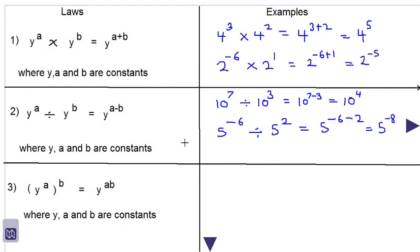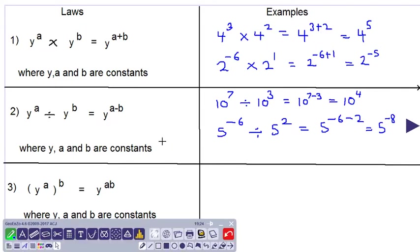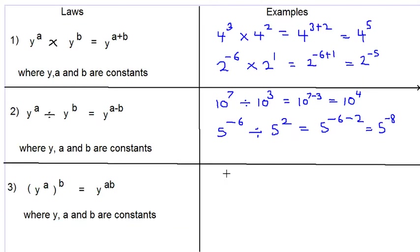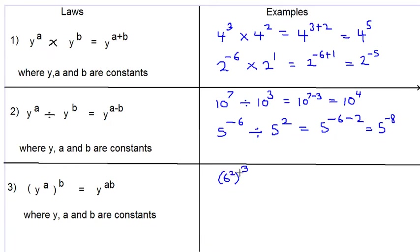Let's look at number 3. Law number 3 says y to the power a raised to the power b is equal to y to the power a multiplied by b, where y, a and b are constants. For example, 6 to the power 3, raised to the power 2, would be equal to 6 to the power 2 multiplied by 3.